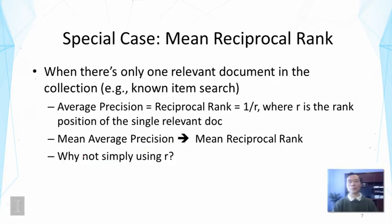As a special case of mean average precision, we can think about the case where there is precisely one relevant document. This happens often in what's called a known item search, where you know a target page — for example, finding the Amazon homepage. In question answering, there may also be only one answer. In this case, you can verify that the average precision boils down to reciprocal rank — that is, 1 over r, where r is the rank position of that single relevant document.